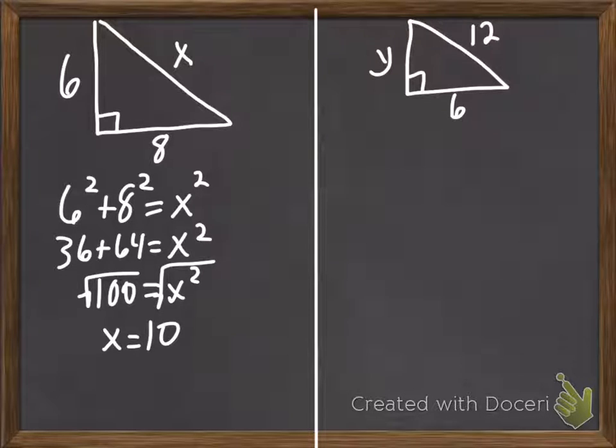On the right, we have a right triangle with legs of y and 6, and the hypotenuse 12. So, we're trying to find one of the legs. It does not matter if you put the leg in place of a or b. I normally like when I'm solving for a leg to put it first. So, y squared plus 6 squared equals 12 squared.